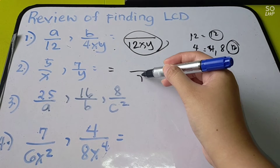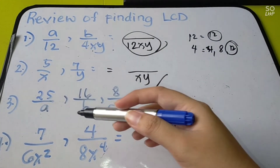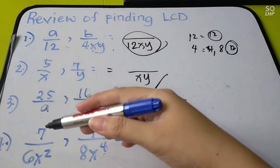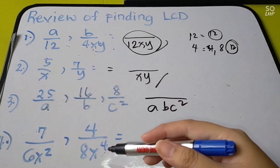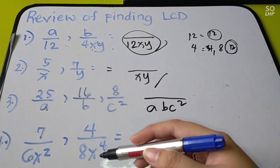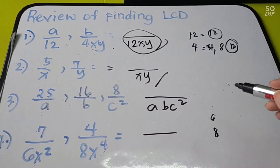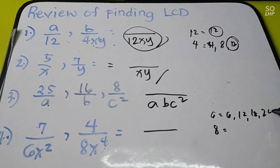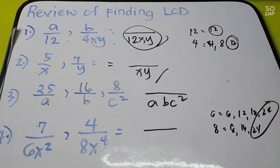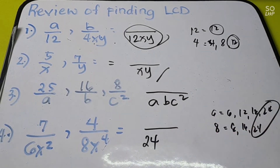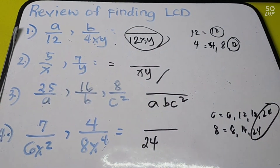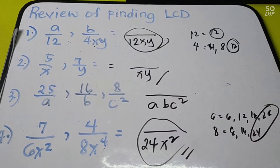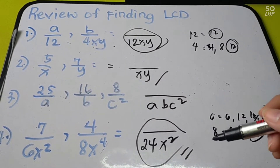For denominators x and y, since they have no common factor, the LCD is xy. For a, b, and c squared with no common factors, the LCD is abc squared. For 6x squared and 8x to the 4th: find LCM of 6 and 8 — multiples of 6 are 6, 12, 18, 24; multiples of 8 are 8, 16, 24 — they match at 24. For the variable x, take the highest exponent, which is x to the 4th. So the LCD is 24x to the 4th.